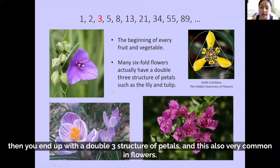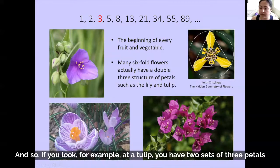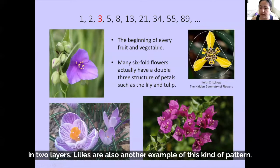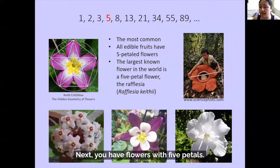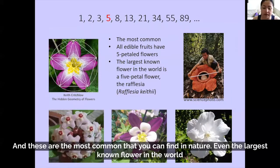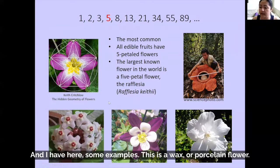For example, if you look at a tulip, you have two sets of three petals in two layers. Lilies are also another example of this kind of pattern. Next, you have flowers with five petals, and these are the most common that you can find in nature. Even the largest known flower in the world is a five-petal flower. I have some examples here — a wax or porcelain flower and a kind of hibiscus flower.